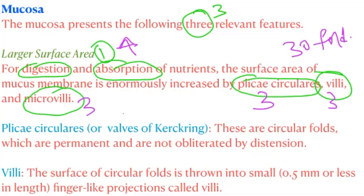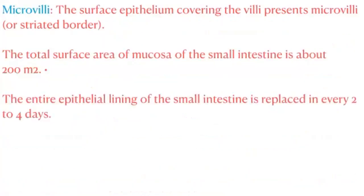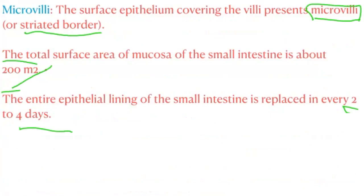Villi are small finger-like projections of 0.5 mm or less in length on the surface of the circular folds. Microvilli are present on the surface of the epithelium covering the villi, forming the striated border. The total surface area of the mucosa of the small intestine is about 200 square meters. The entire epithelial lining of the small intestine is replaced every 2 to 4 days.